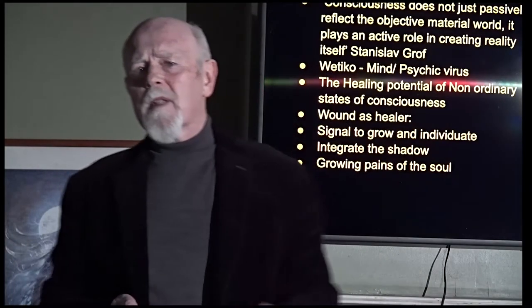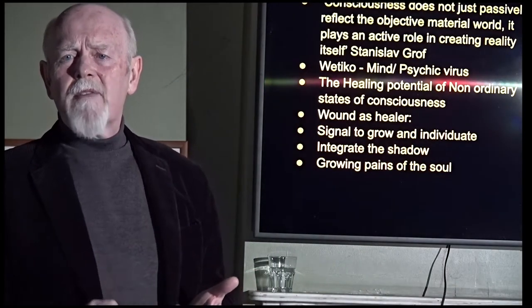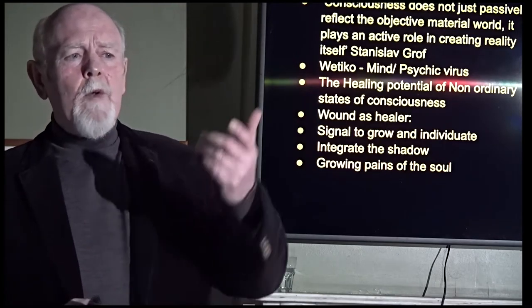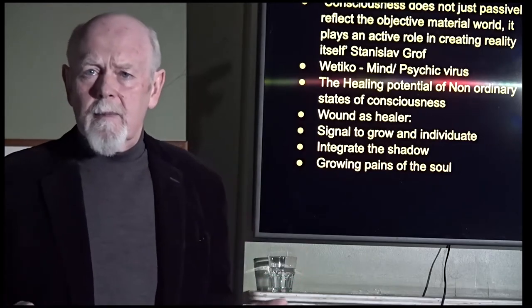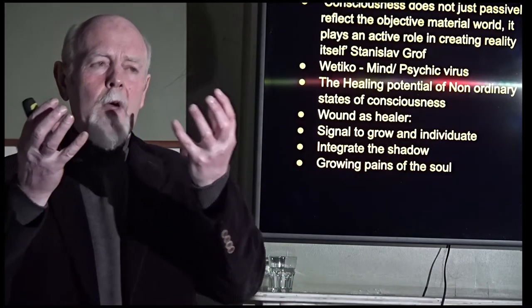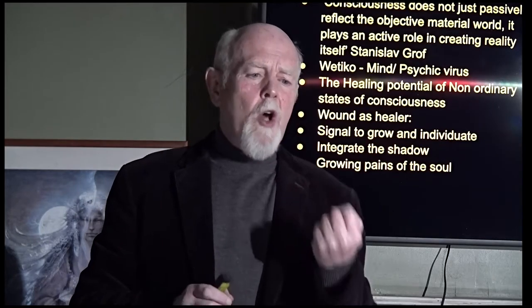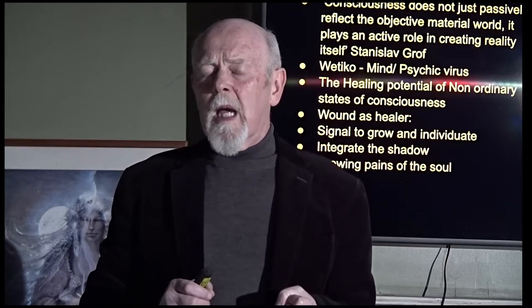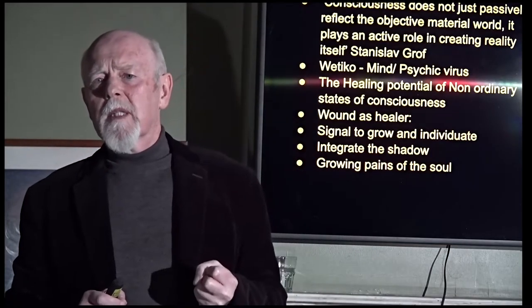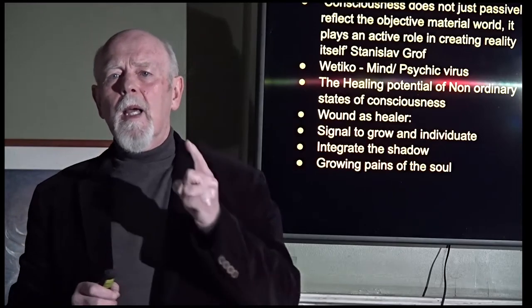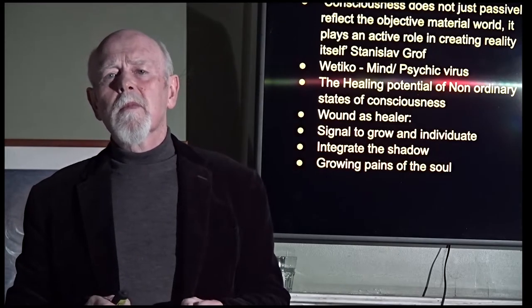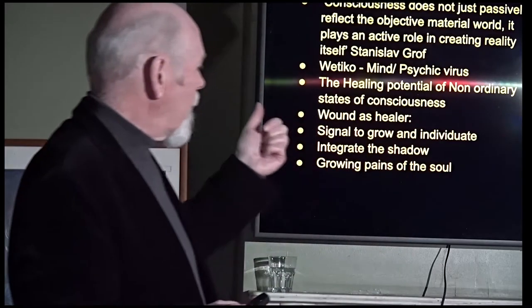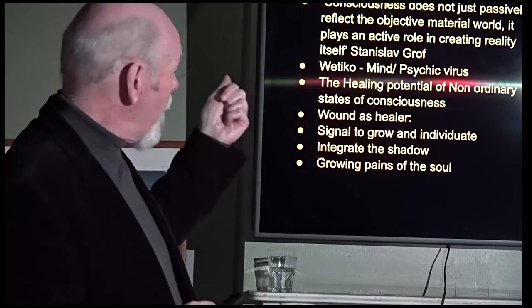So how does it manifest itself? It manifests itself in greediness, in avarice, in aggression, in creating wars, in capitalism, in the sense of taking from the earth everything that she cannot afford to give us because we are so hungry within ourselves and we feel so empty within ourselves that we want to consume the world to fill that up. And that will lead to our destruction. That will lead to the end of the human species if we don't find a remedy or a vaccine for the Wetiko.